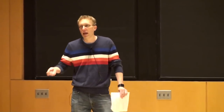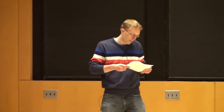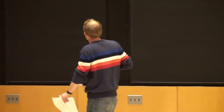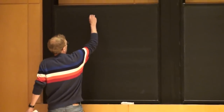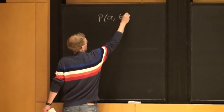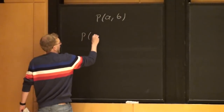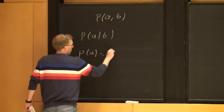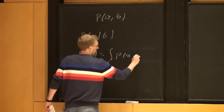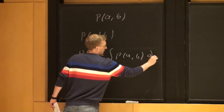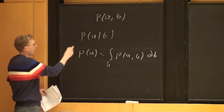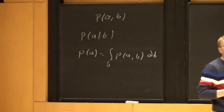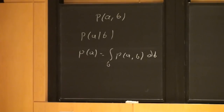Marginalizing gives you a Gaussian, normalizing gives you a Gaussian, and most importantly, conditioning gives you a Gaussian. So if you have P of A comma B, then P of A given B is Gaussian, and P of A — which is the integral — is Gaussian. So today we will use this as a superpower and keep it in the back of your mind.